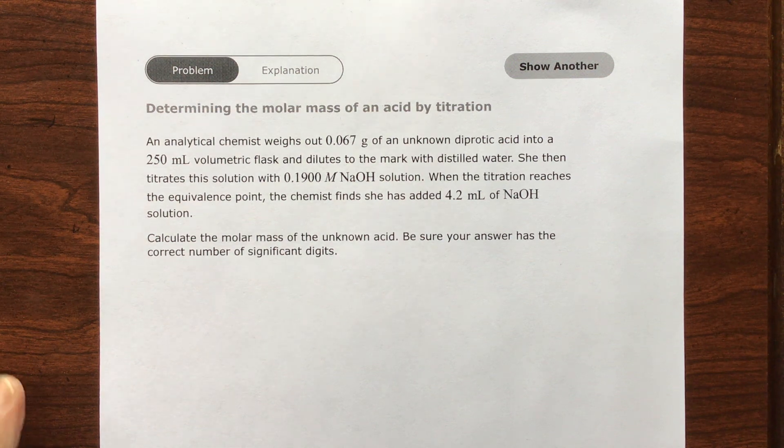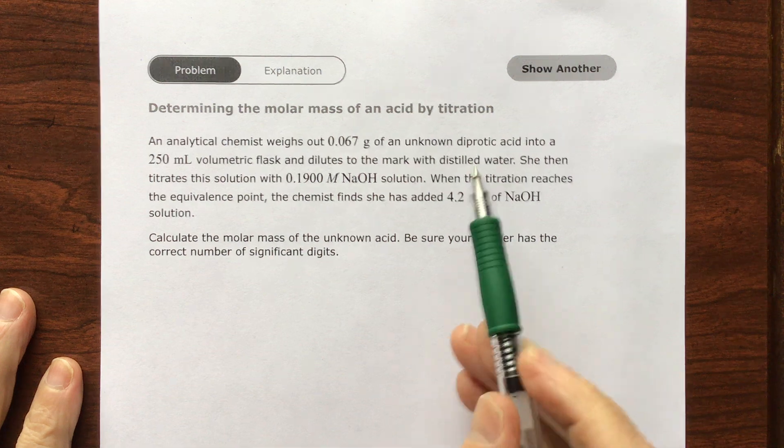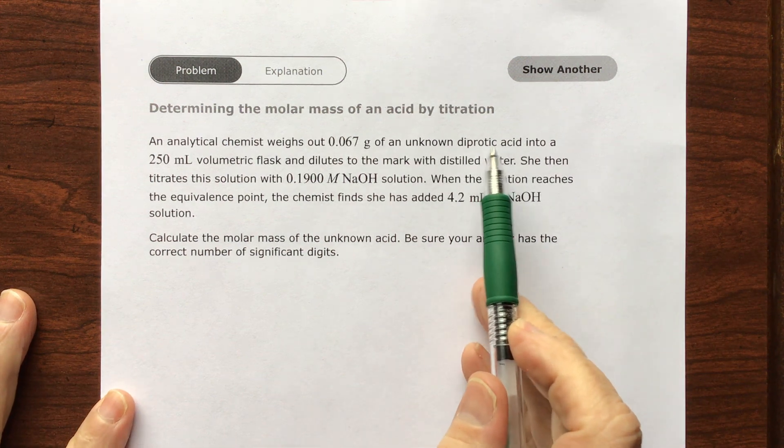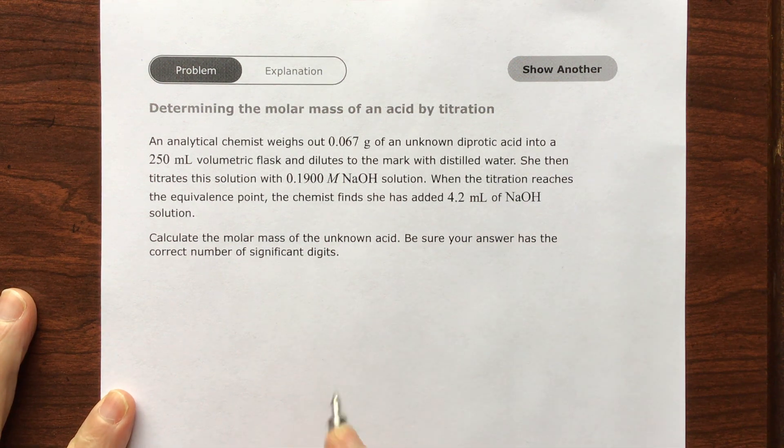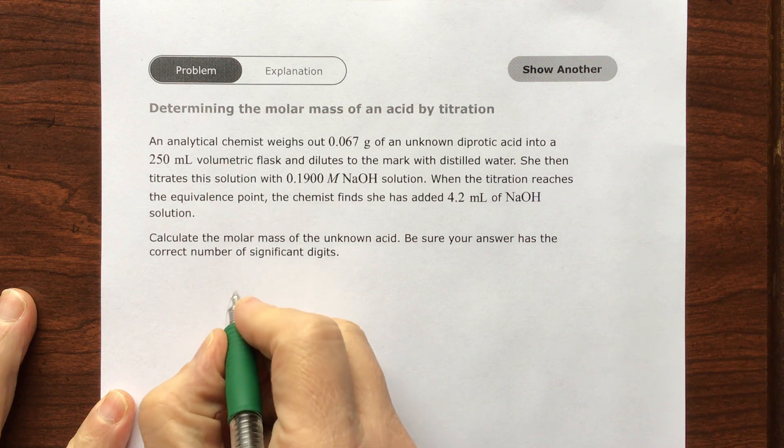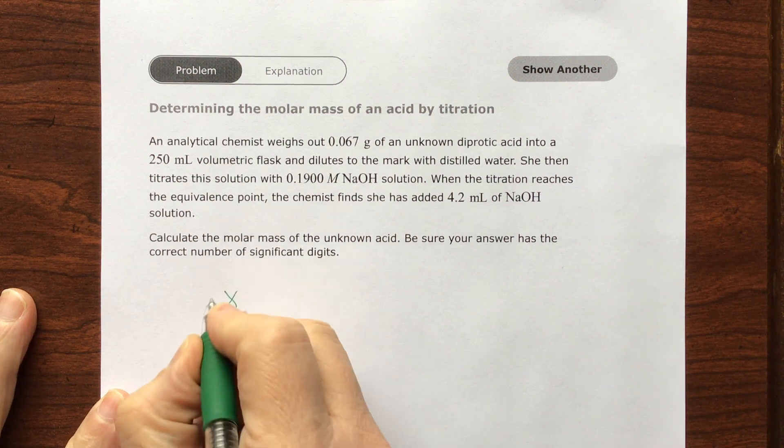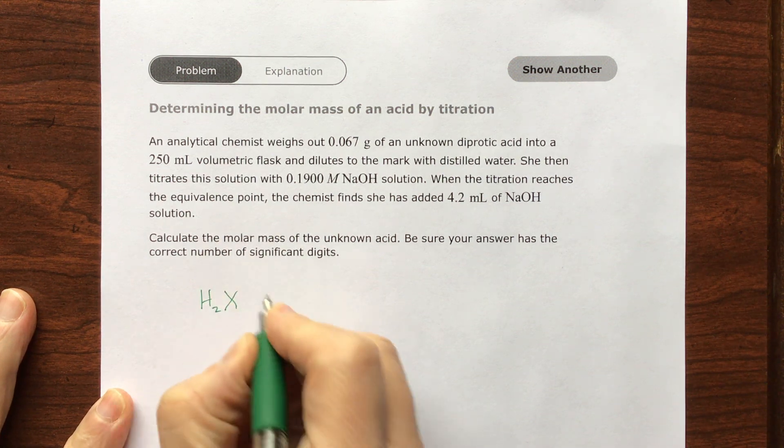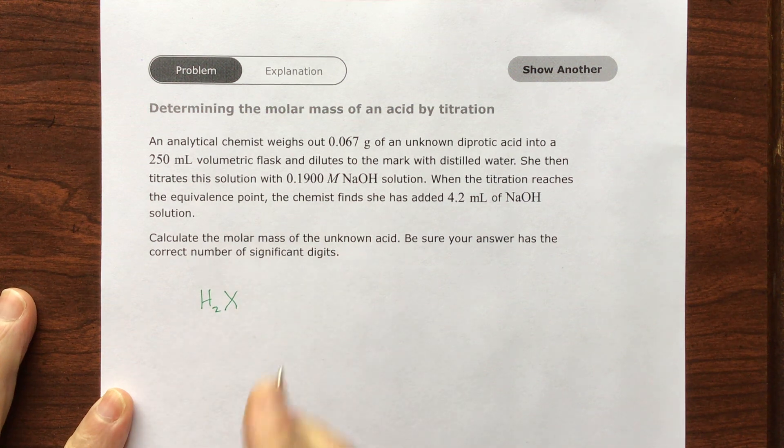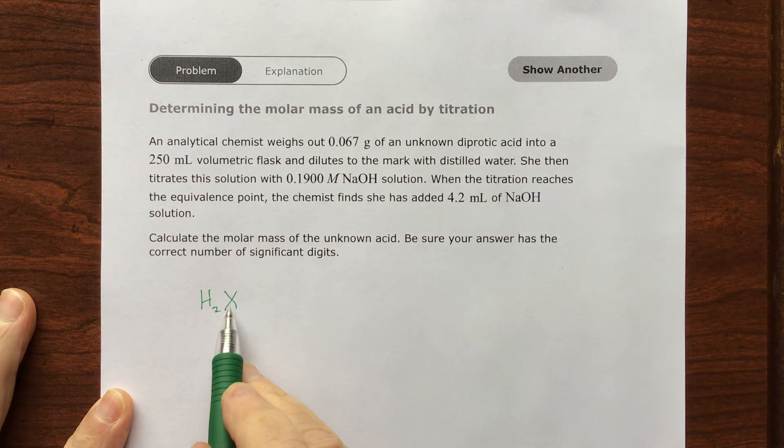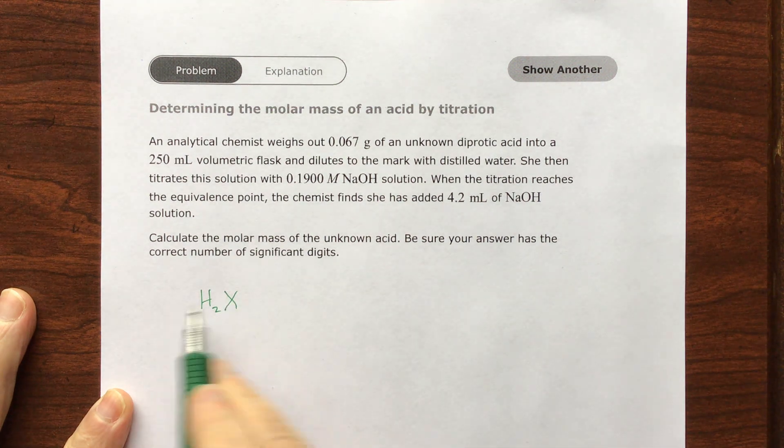If you were to make an acid, in this case it's a diprotic acid so there's two protons. Let's just do a generic two protons. I've got H2X, so that's an acid. I don't know what this is, so it's just something, whatever this is, the base part or the conjugate base of this acid.